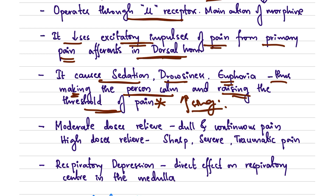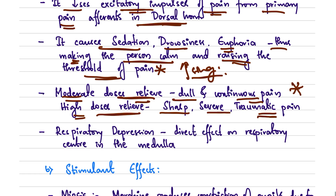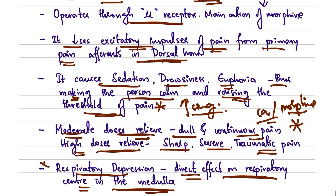Moderate doses relieve dull and continuous pain, while high doses relieve sharp, severe, and traumatic pain — making morphine the drug of choice for severe pain in accidents and cancer. Morphine also causes respiratory depression through a direct effect on the respiratory center in the medulla, which is very important to watch out for.